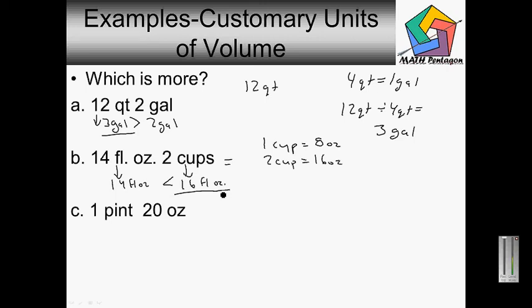Let's go to the next one. We have 1 pint and 20 ounces. First, I want to figure out how much is 1 pint. 1 pint is equal to 2 cups, and then 2 cups is equivalent to 16 fluid ounces. So 1 pint is 16 fluid ounces.